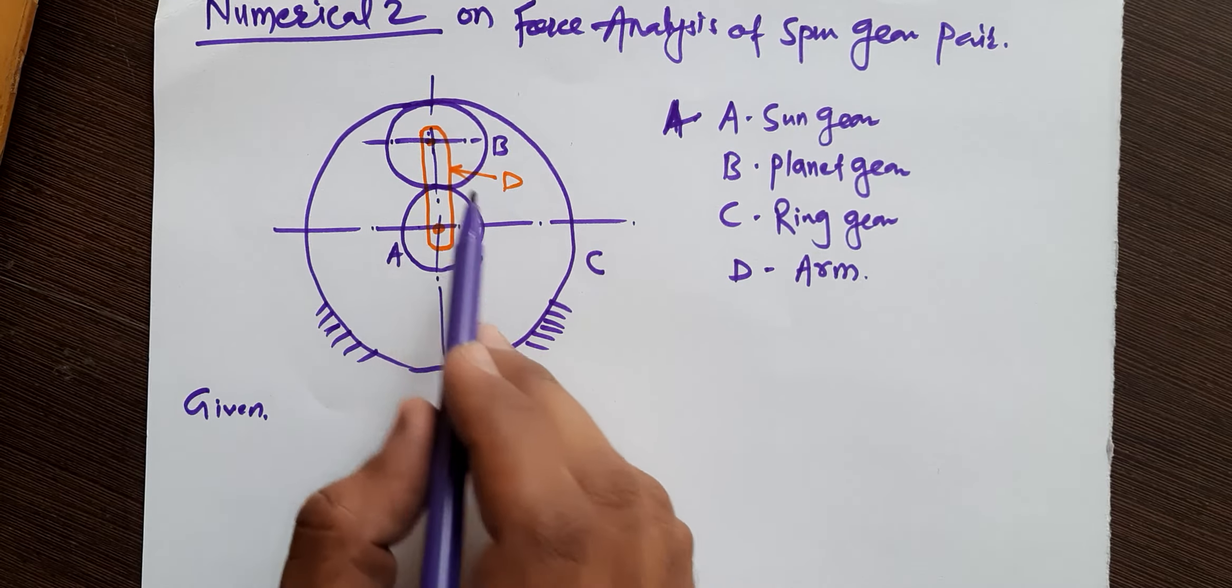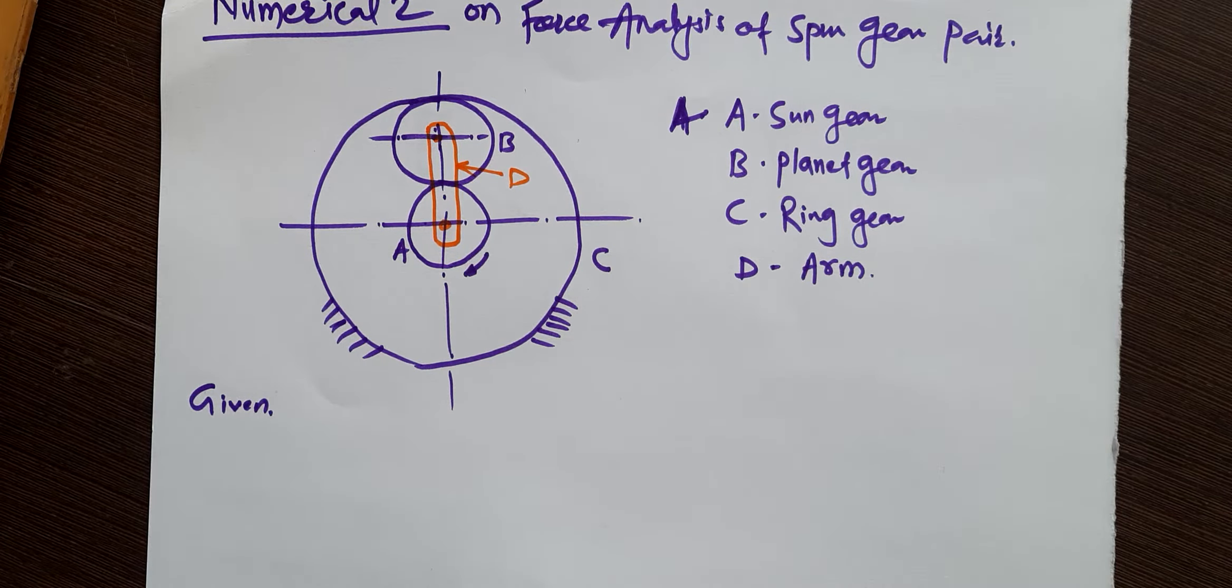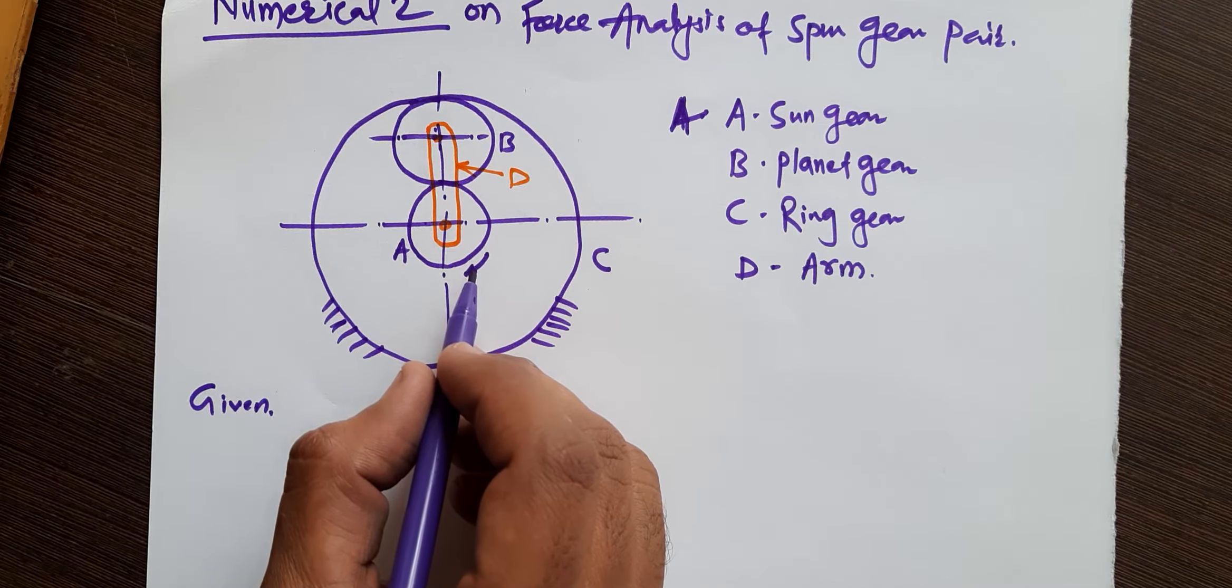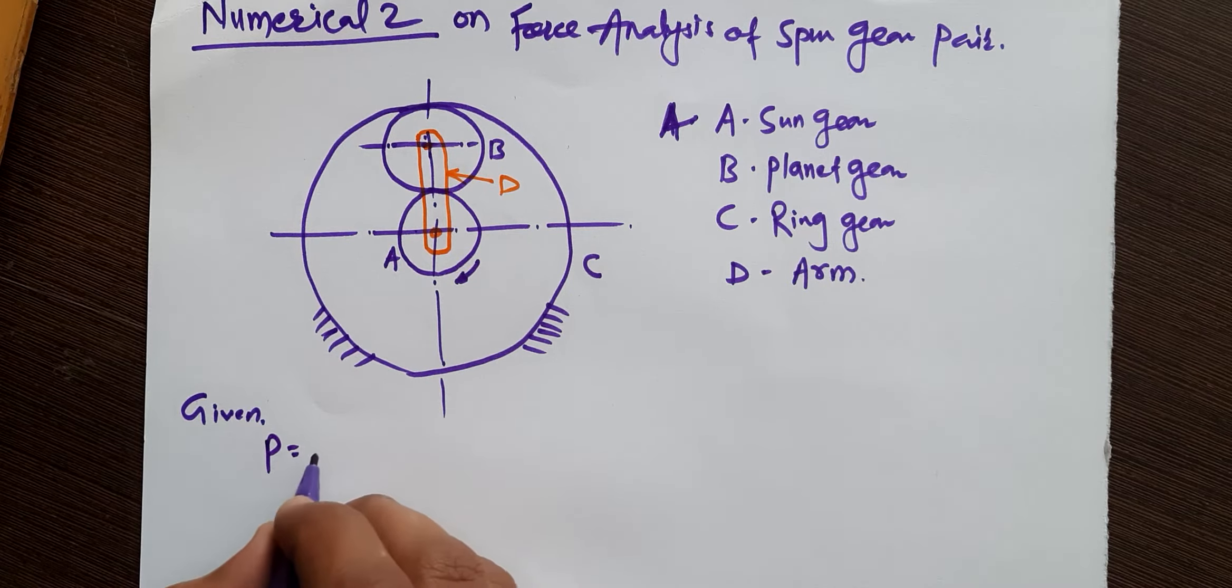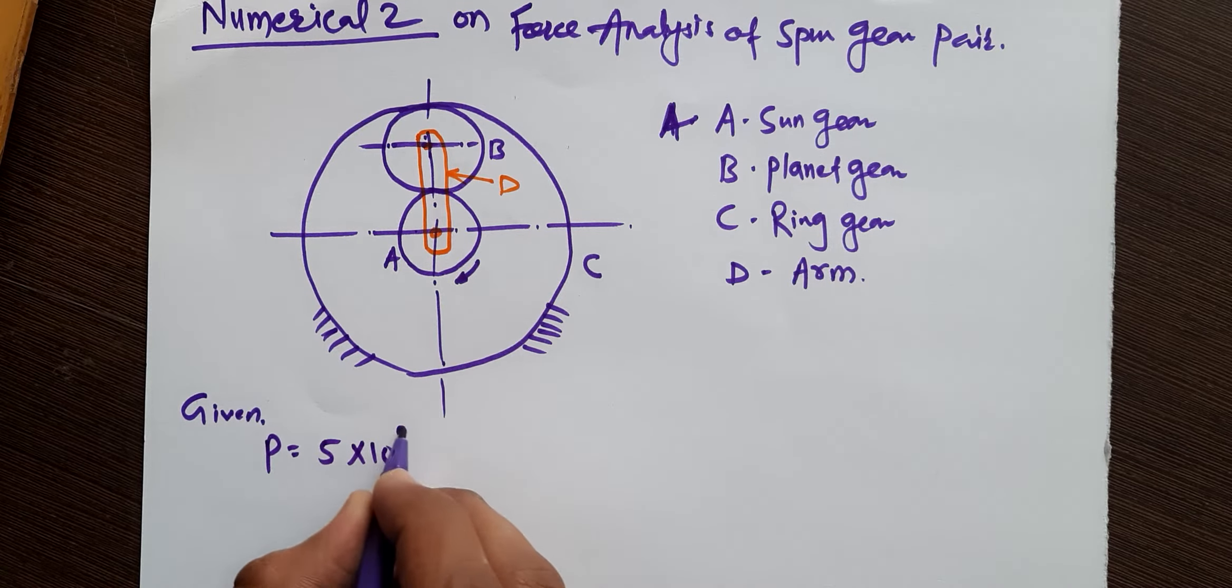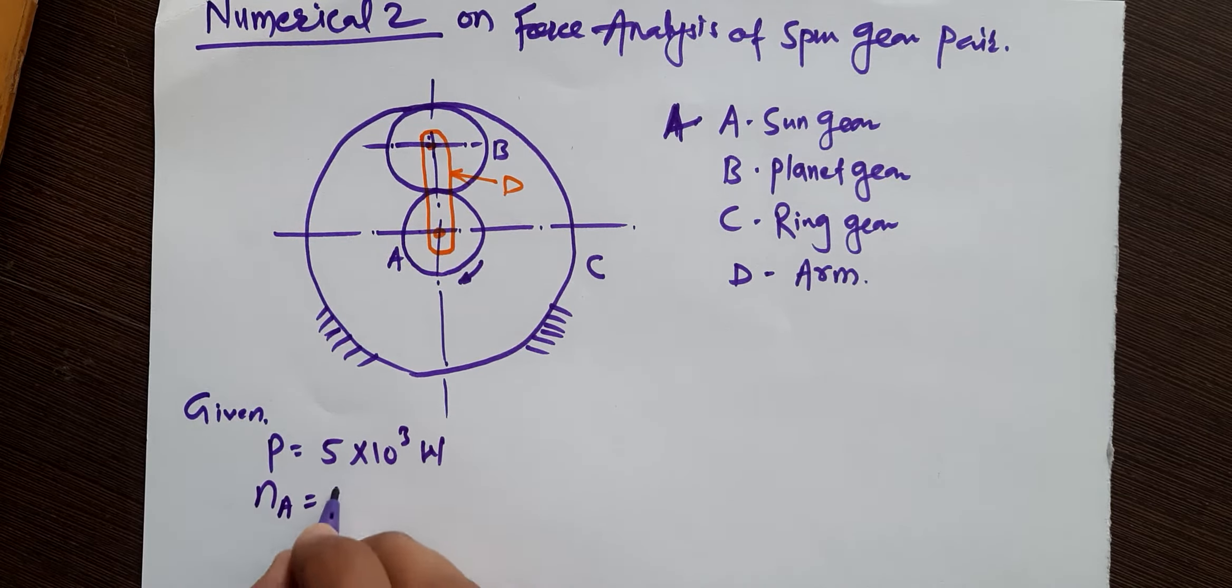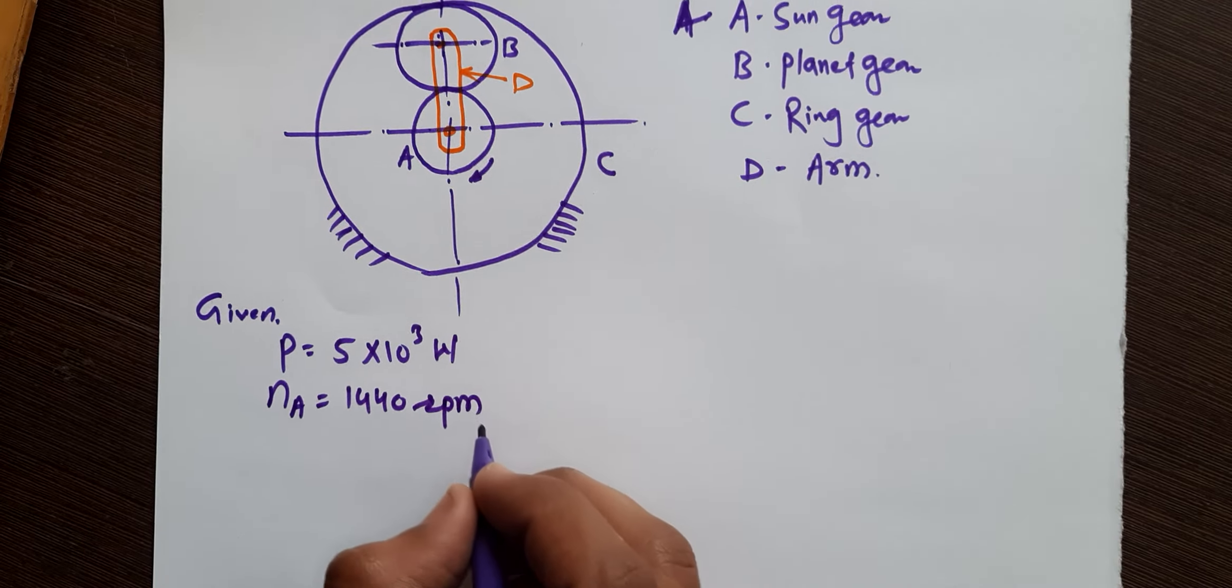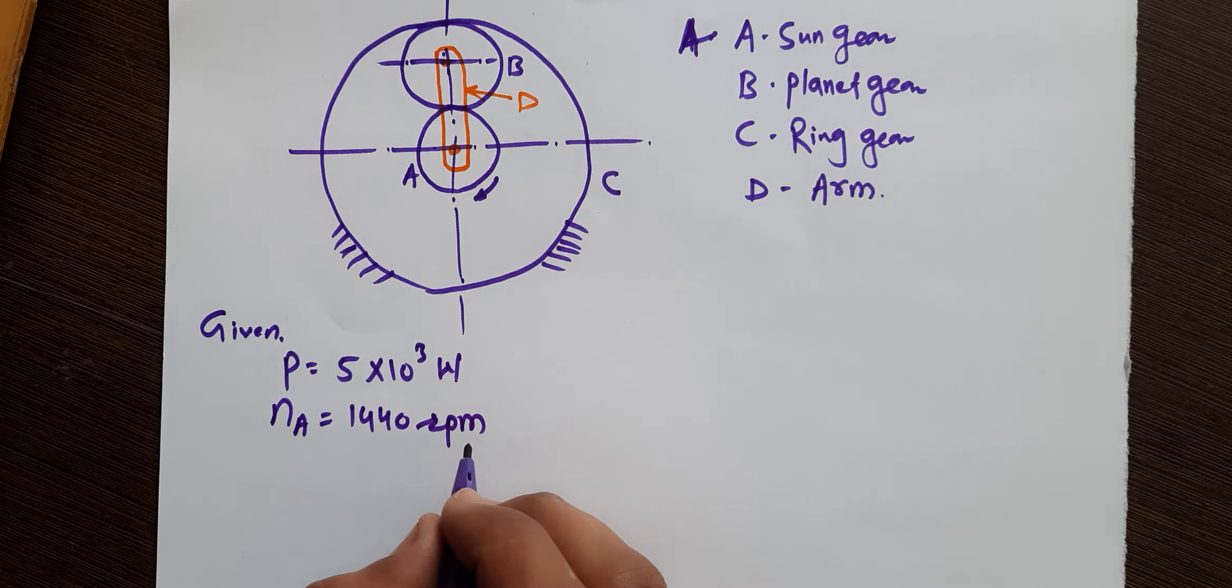The Sun gear A rotates in clockwise direction and transmits 5 kilowatt power. So your power is given as 5 kilowatt, which means 5×10³ watts, at 1440 rpm. The speed of A is given as 1440 rpm, the planet gear B and a fixed ring gear C.